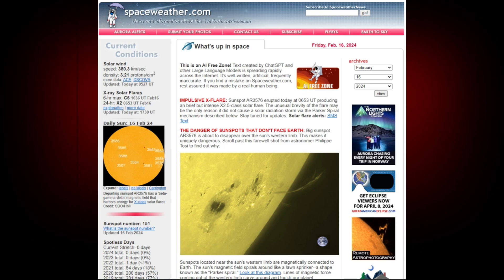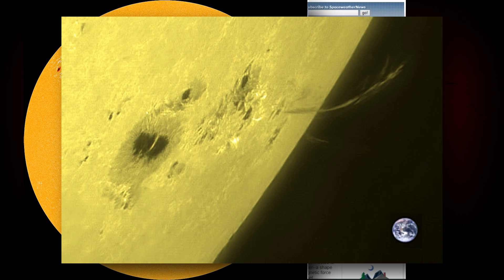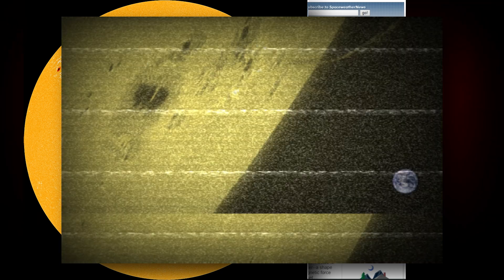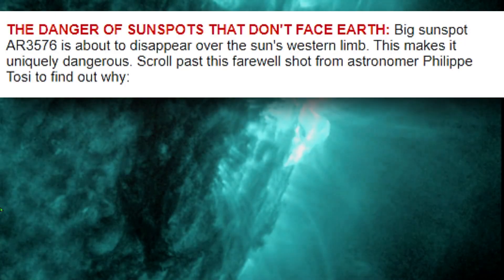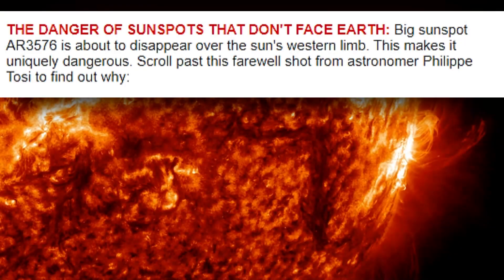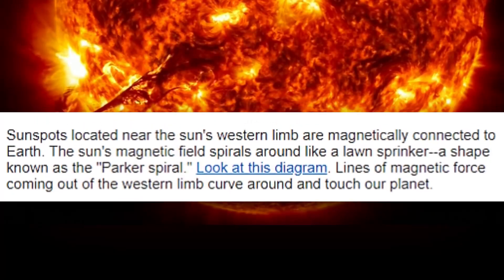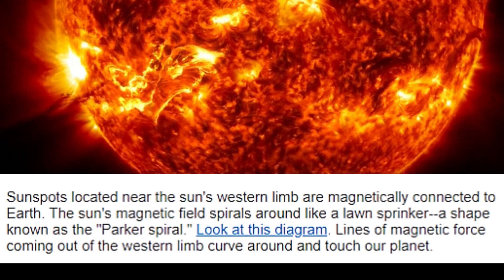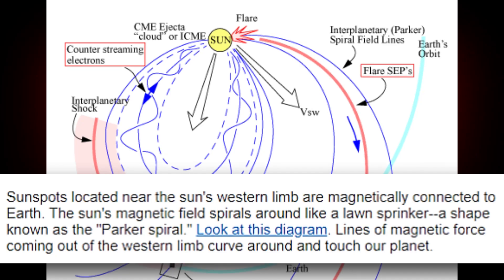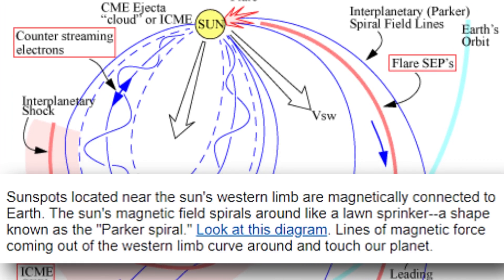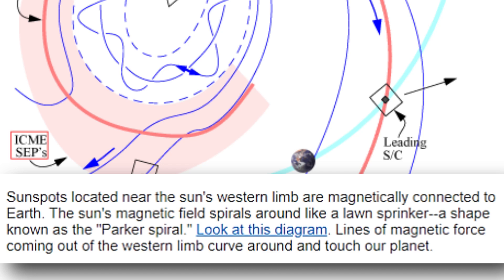Not only are they showing a close-up view of sunspot AR-3576, which is the culprit of this solar flare, but it also explains this: The danger of sunspots that don't face Earth. Big sunspot AR-3576 is about to disappear over the sun's western limb. This makes it uniquely dangerous. Sunspots located near the sun's western limb are magnetically connected to the Earth. The sun's magnetic field spirals around like a lawn sprinkler, a shape known as the Parker spiral, which are lines of magnetic force coming out of the western limb curve around and touch our planet.